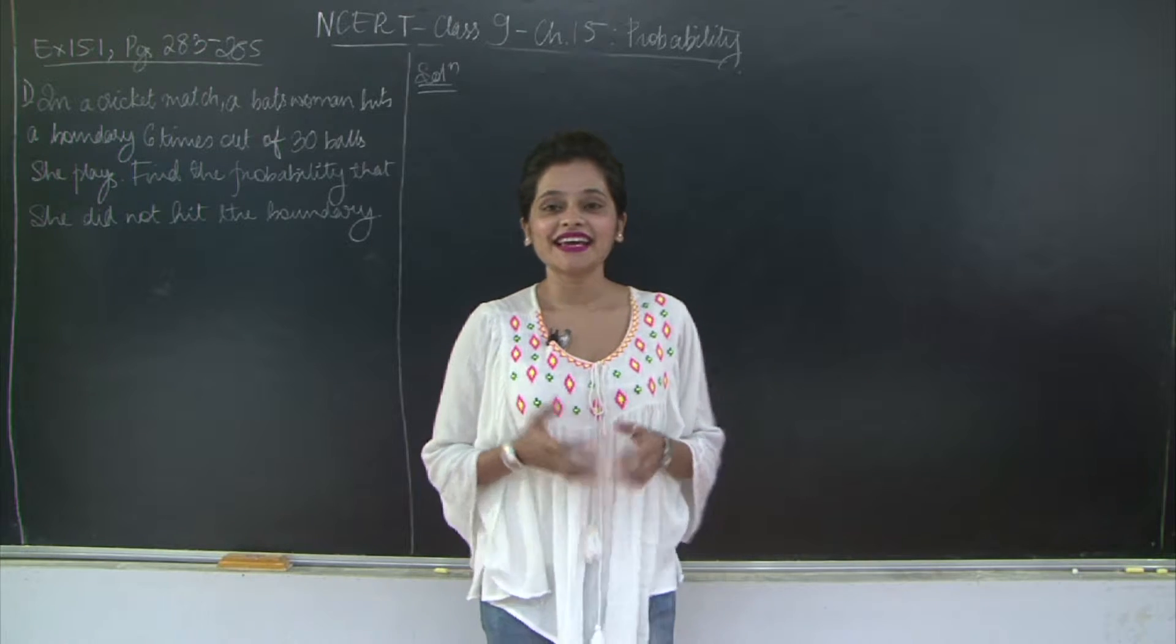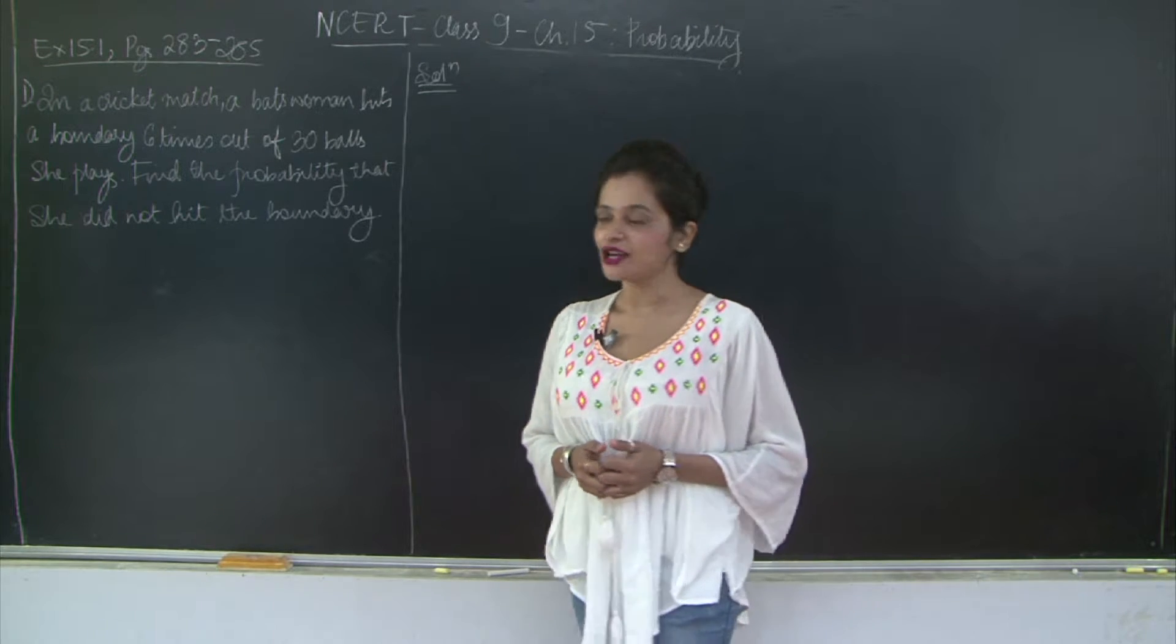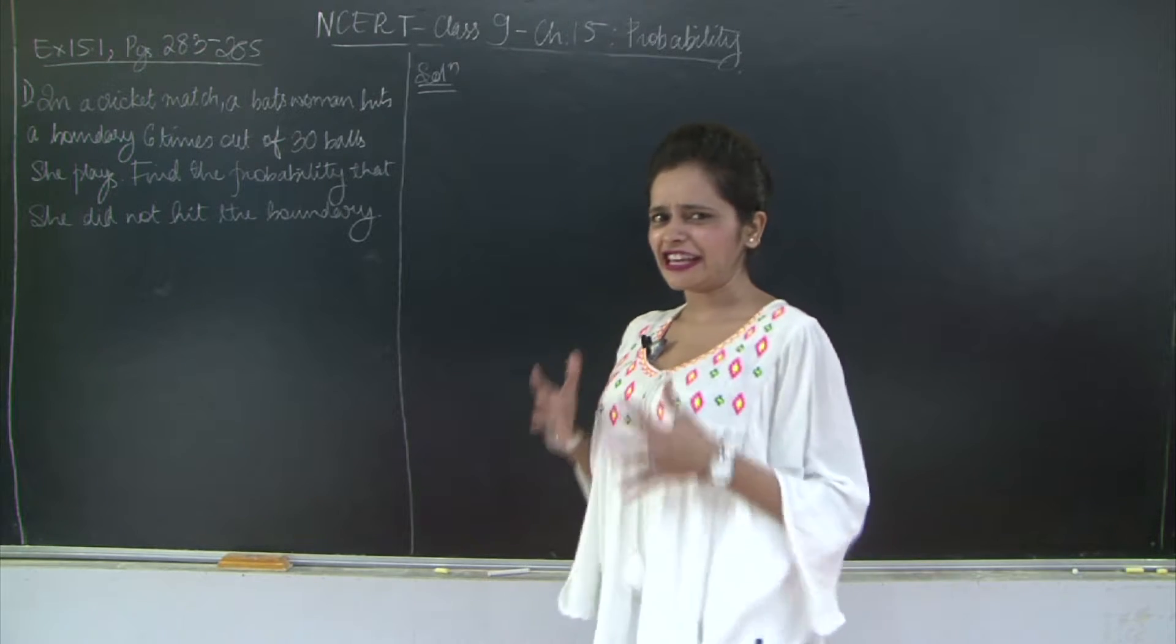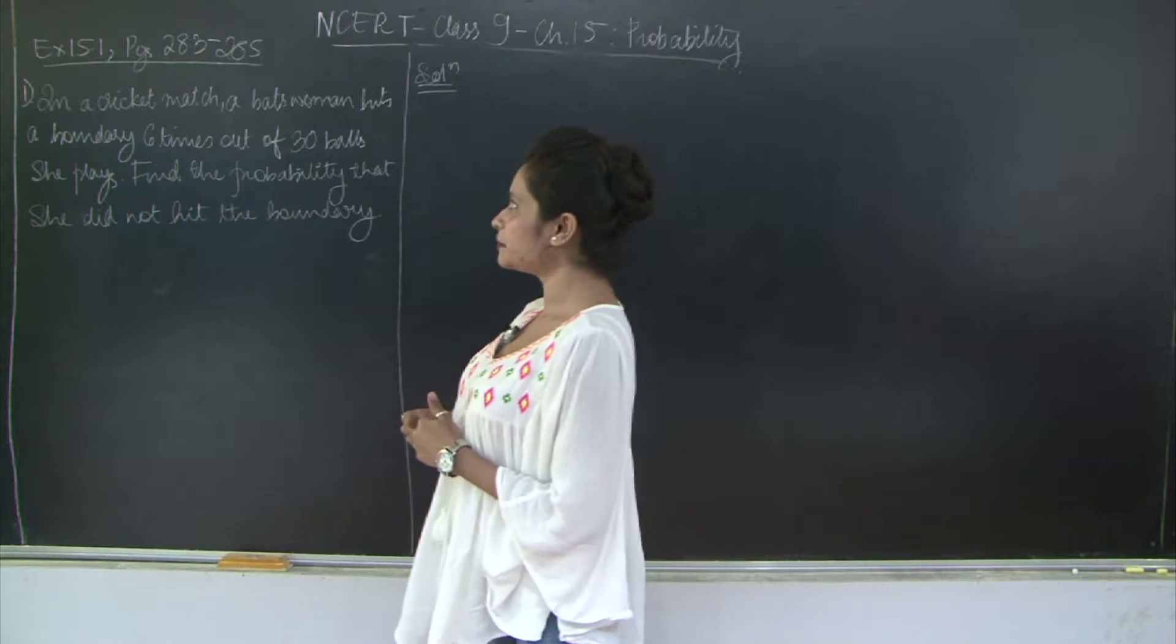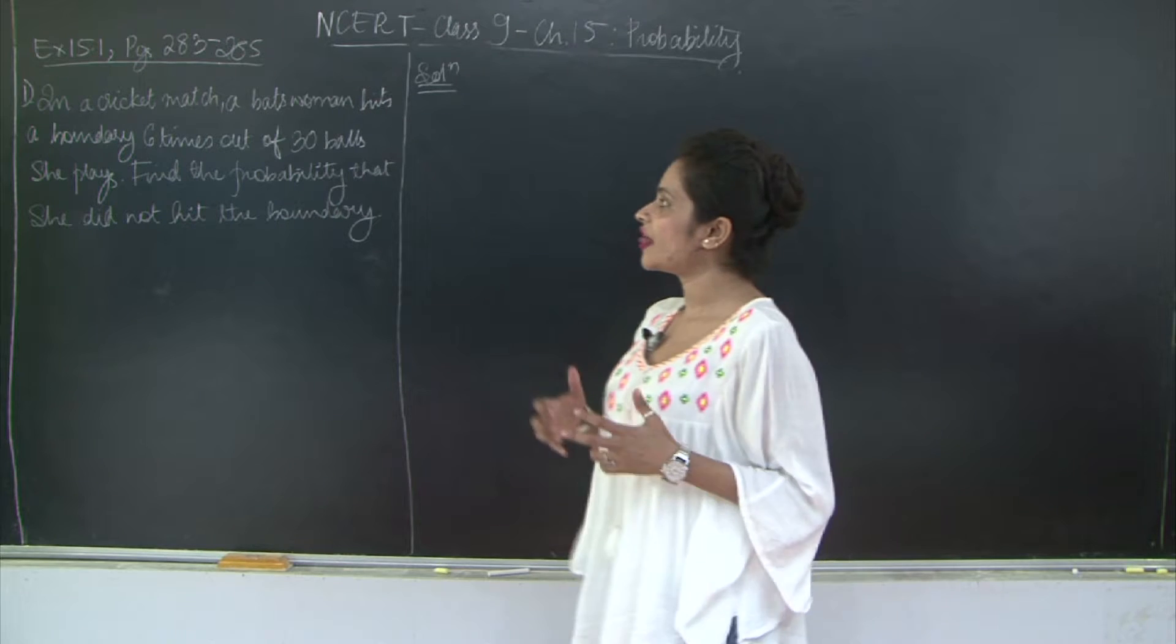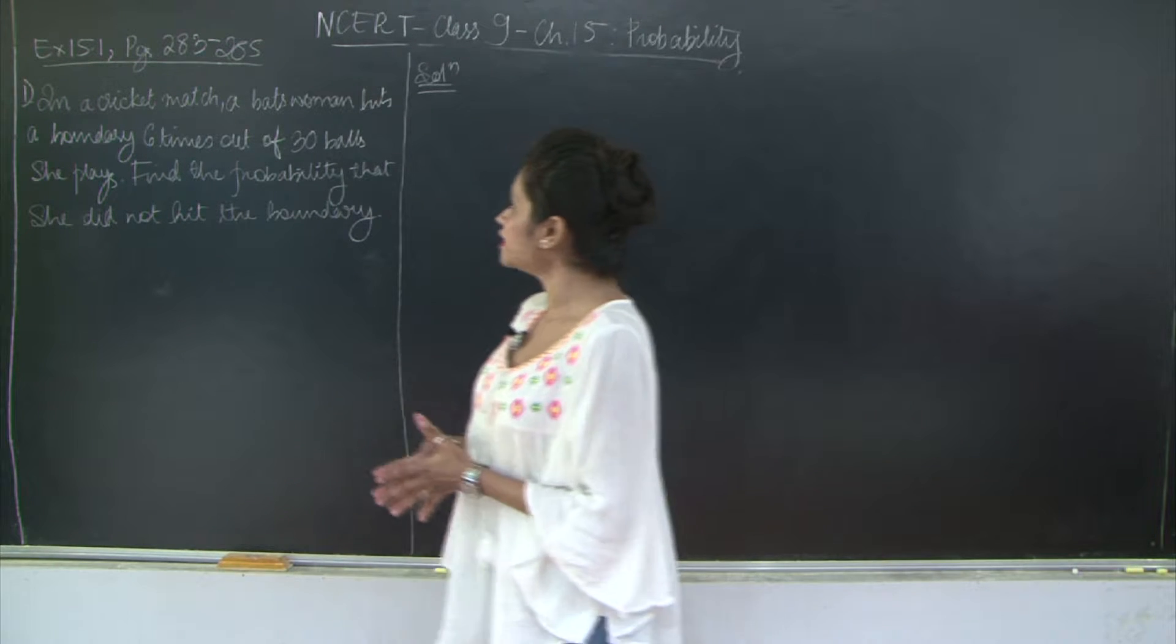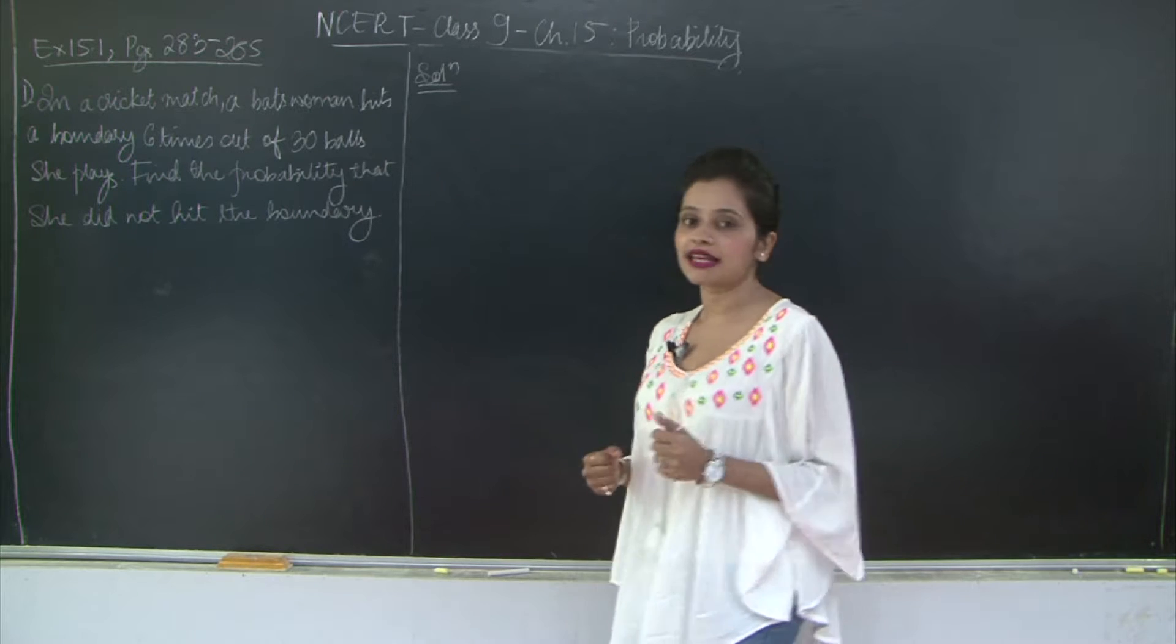Hello students, welcome back. Let us start with exercise 15.1 of chapter 15, probability. The first question, a very simple one: In a cricket match, a batswoman hits the boundary six times out of 30 balls that she plays. Find the probability that she did not hit the boundary.